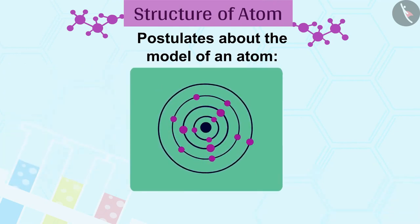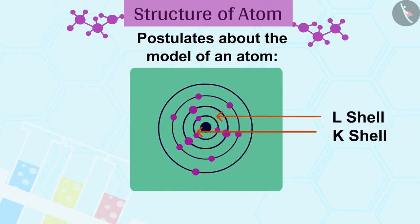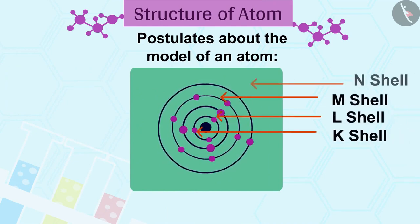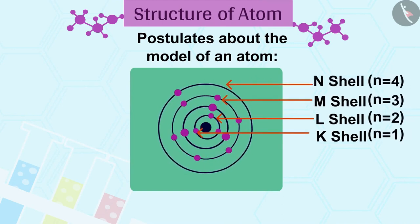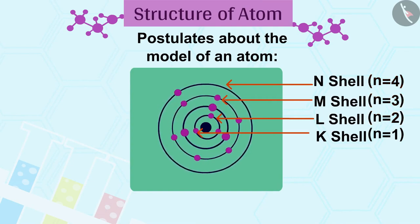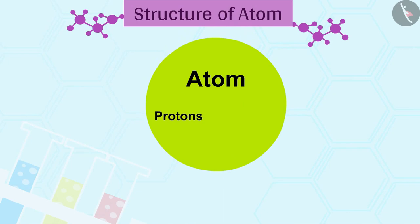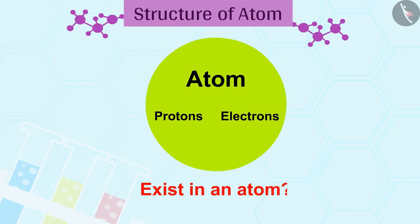These orbits or shells are represented by the letters K, L, M, N or the numbers n = 1, 2, 3, 4 and so on. Do only protons and electrons exist in an atom?